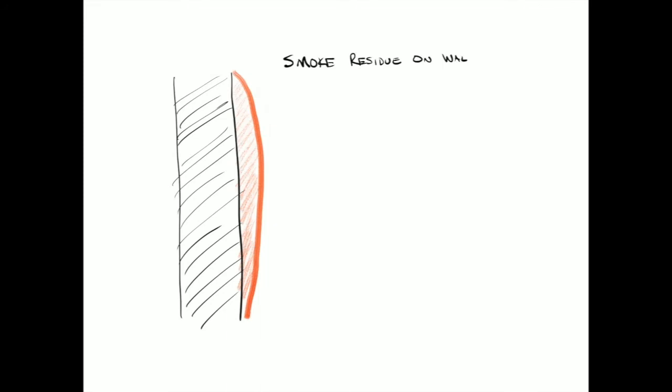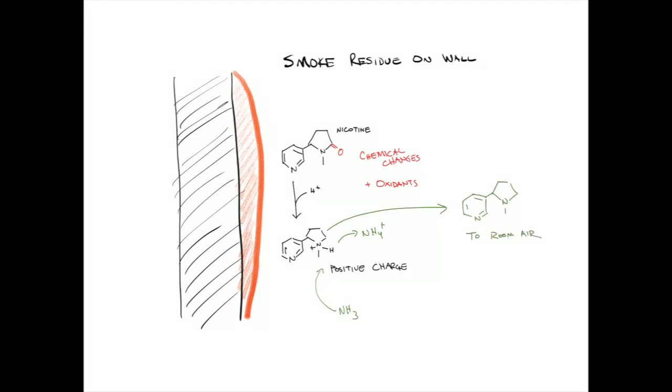Once inside, the smoke residue gets on surfaces, and this is where the chemistry gets interesting. Many of the chemicals in cigarette smoke have nitrogen associated with them. This nitrogen can become positively charged and keep those molecules attached to surfaces until they lose that positive charge. Here, I'm using the nicotine molecule as an example of the various processes these molecules can undergo.